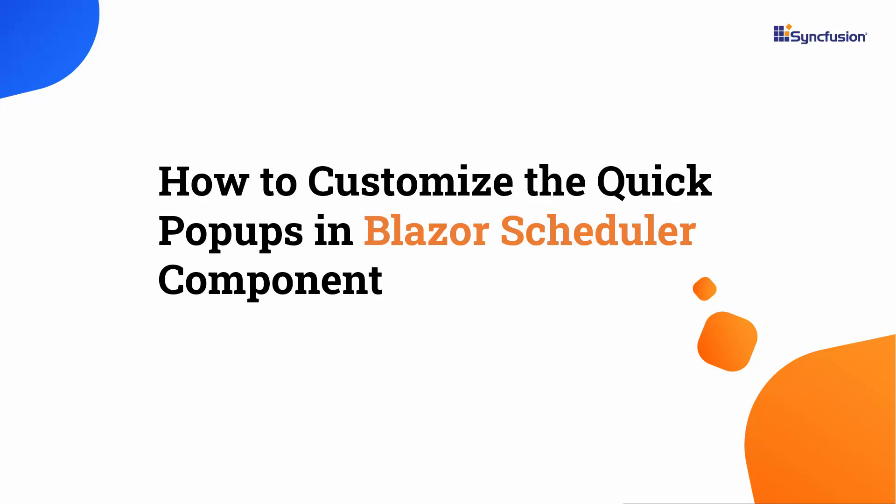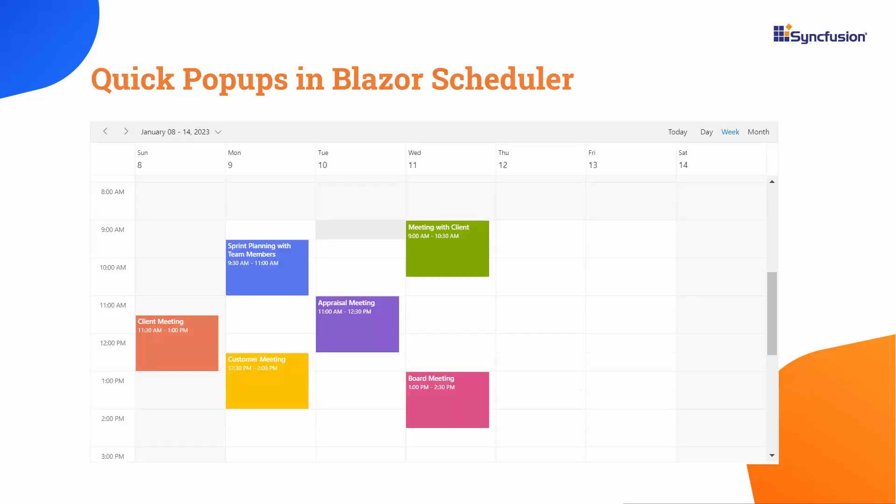Hi everyone, welcome back. In this tutorial, I will show you how to customize the quick pop-ups in Blazor Scheduler component. The quick info pop-ups are the ones that get opened when a cell or appointment is clicked on the cell or event.